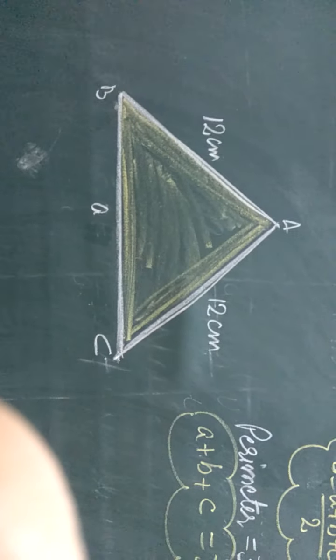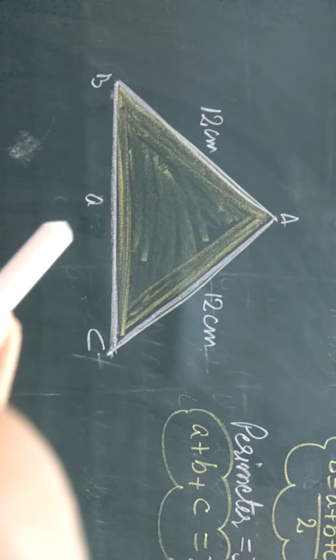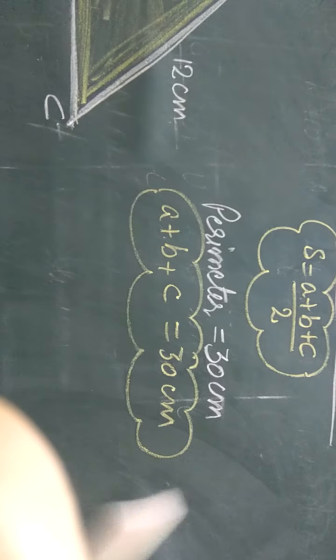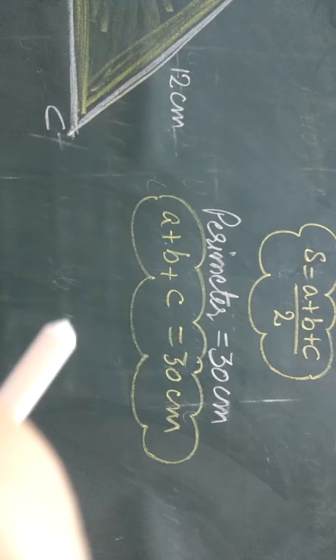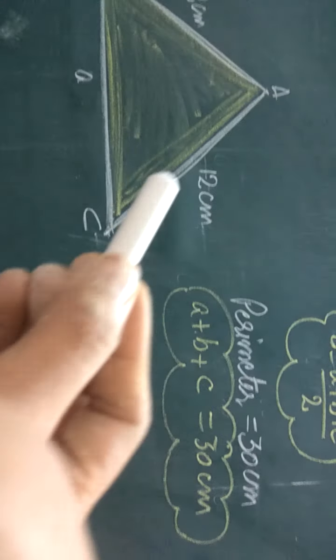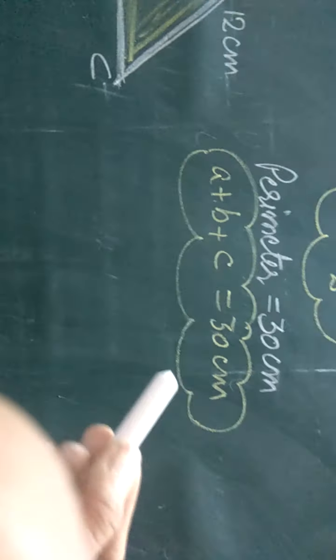To find out the third side, we will use the given perimeter. In our question, what is given to us? Perimeter is given to us, that is 30 cm. And now I hope you all know what is the perimeter of a triangle - the sum of all three sides. So A plus B plus C is equal to 30.